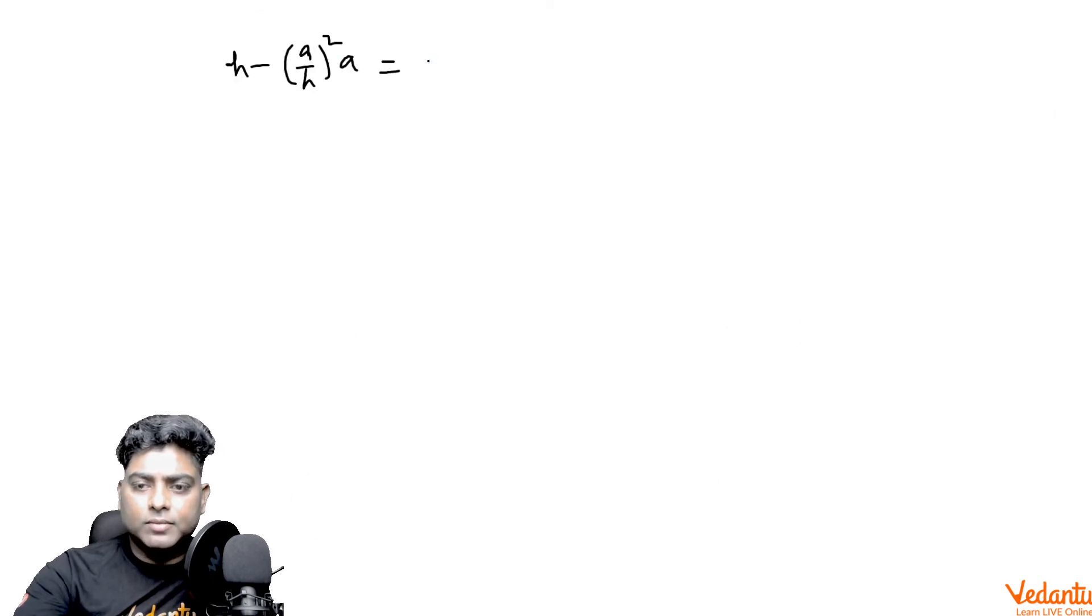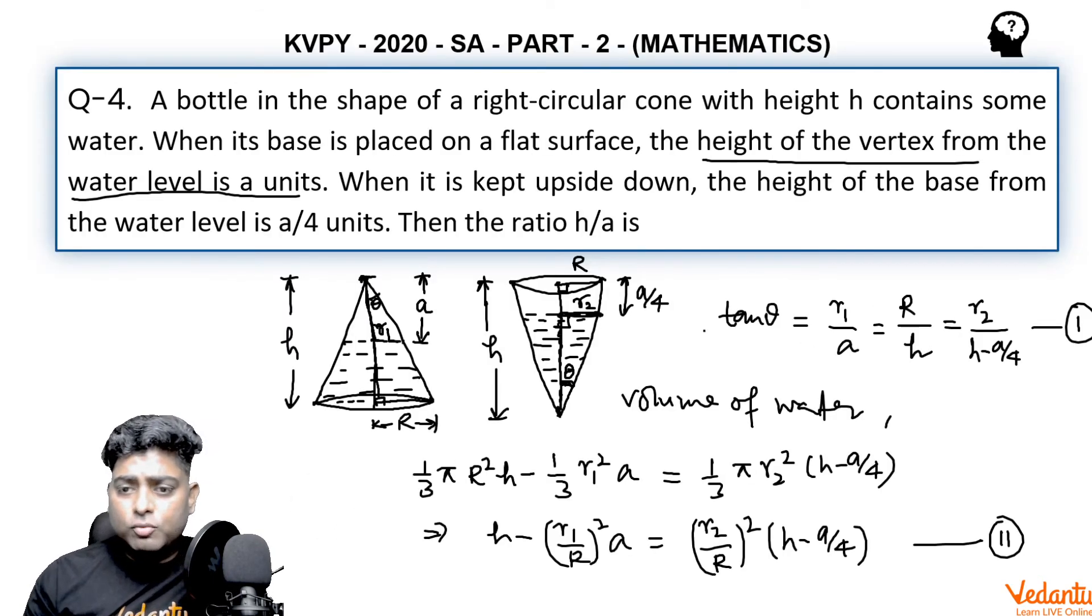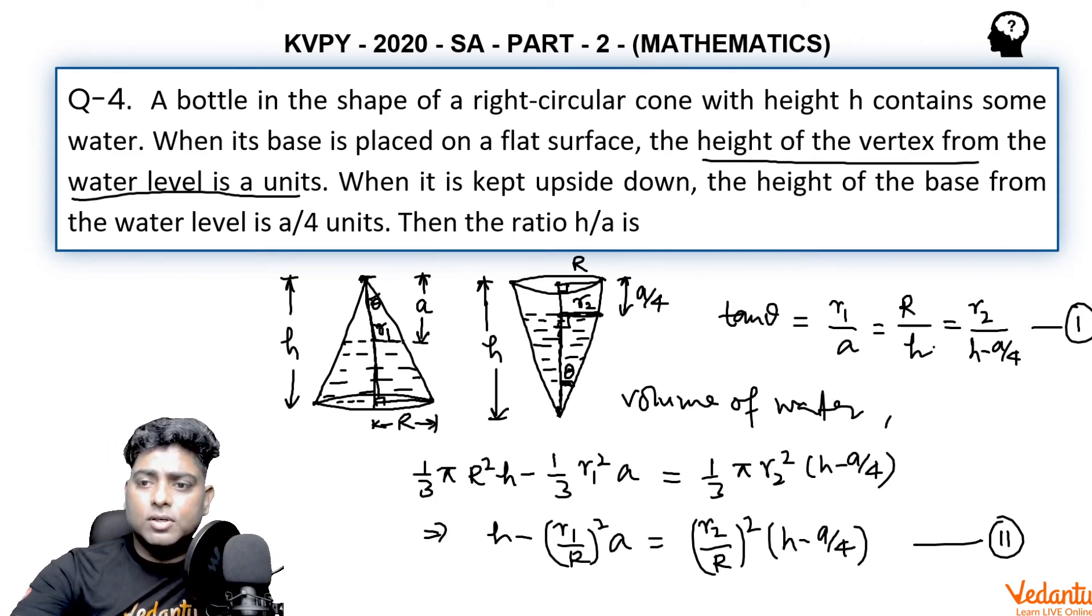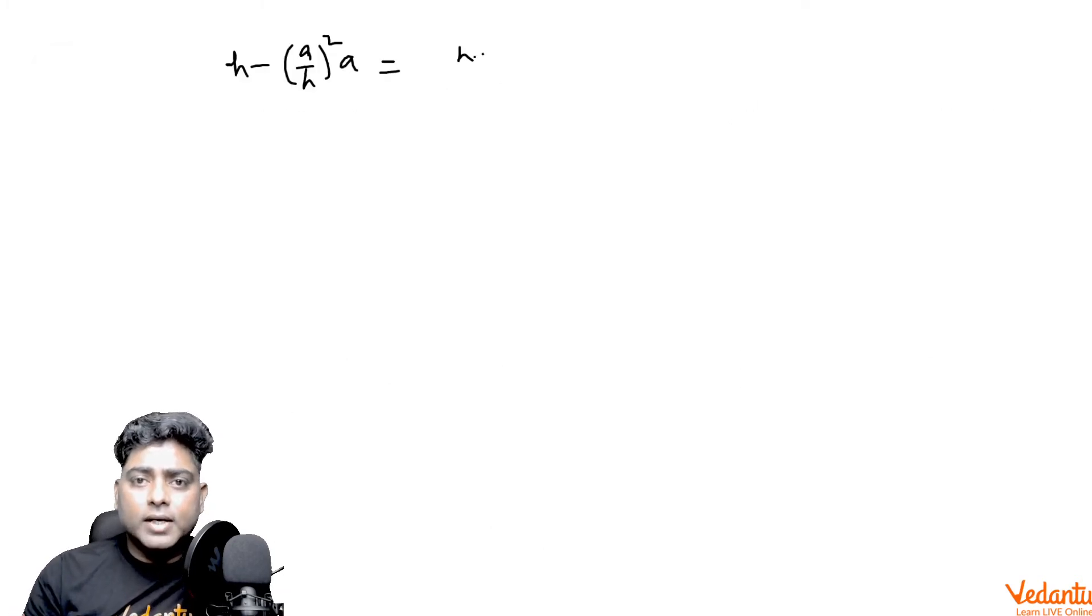The right-hand side: r2 by R equals h minus a by 4 by h whole square into h minus a by 4.